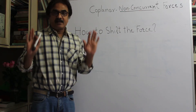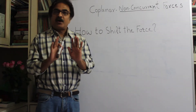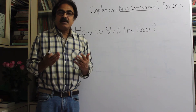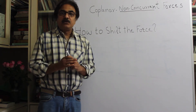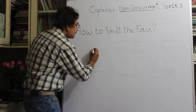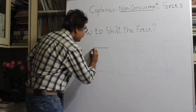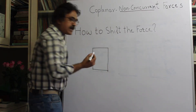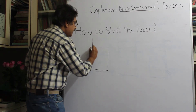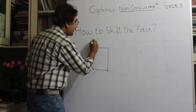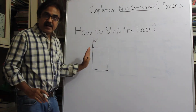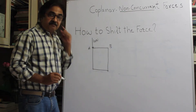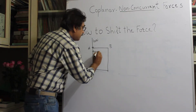We are considering coplanar forces. When we shift a force from one point to another point in the same plane we introduce error, so we need to rectify that. Let's understand the technique. Say we have a body, and on this body there is a force of 10 newtons acting downwards on the left-hand surface.